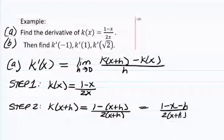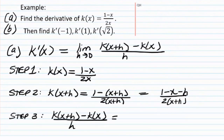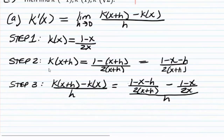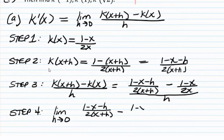I like to leave the denominator factored out. Step three, we're going to have k of x plus h minus k of x divided by h. So that's going to be 1 minus x minus h over 2 times x plus h, minus 1 minus x over 2x, divided by h. Now step four, the limit as h goes to 0 of 1 minus x minus h over 2 times x plus h minus 1 minus x over 2x, all divided by h.